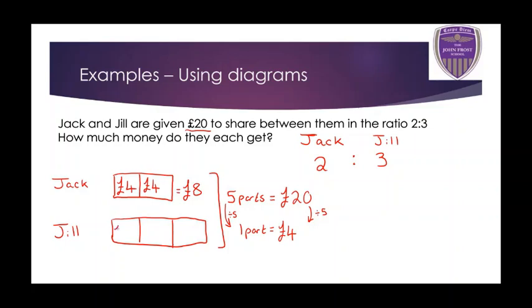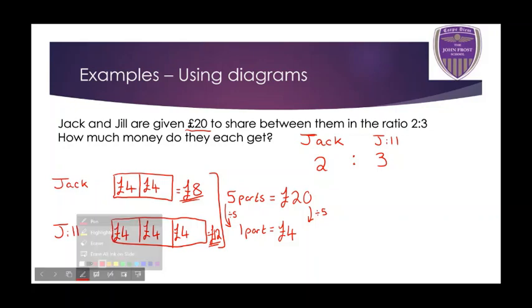What about Jill? She has three boxes, and with 4 pounds in each box, Jill gets 12 pounds in total. Just to double check: 8 plus 12 is 20 — yes it is. So Jack gets 8 pounds and Jill gets 12 pounds. That's the diagram way of answering these ratio questions.